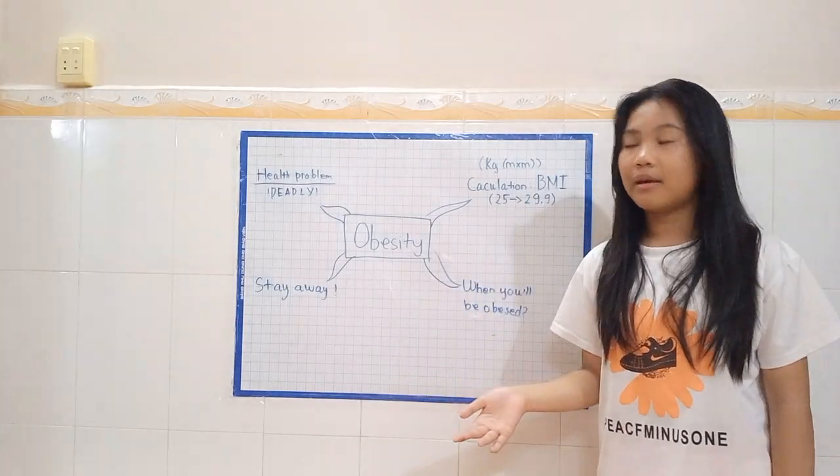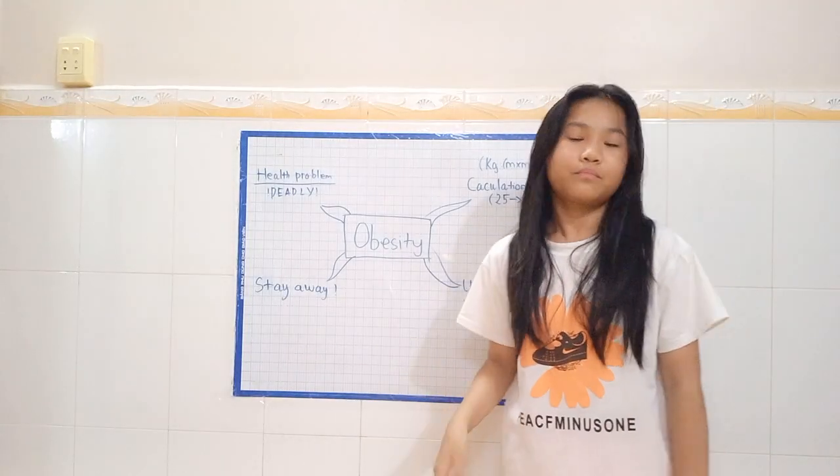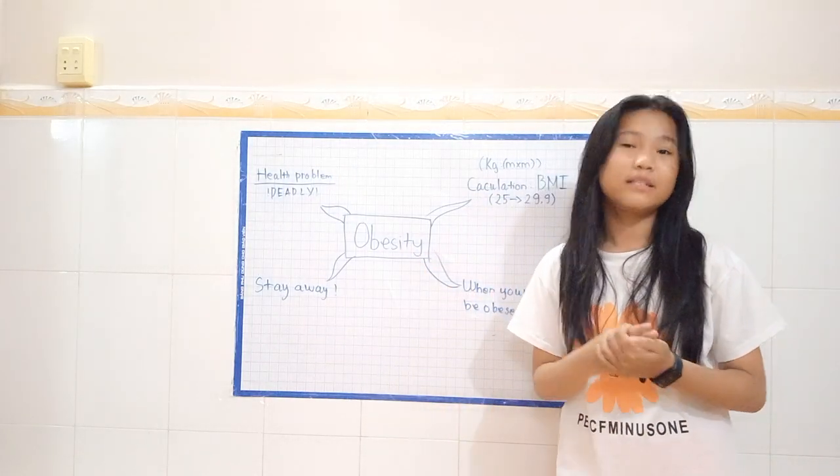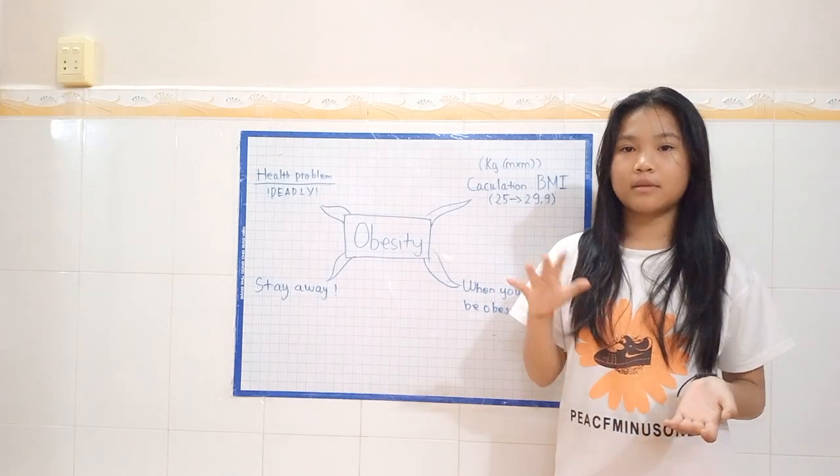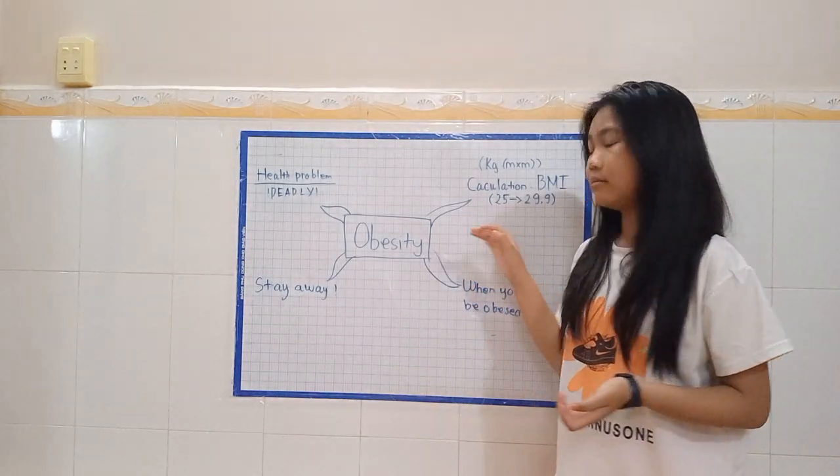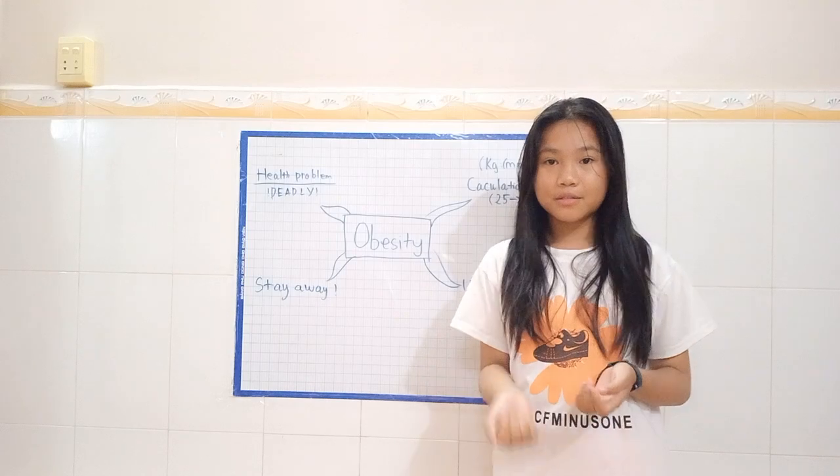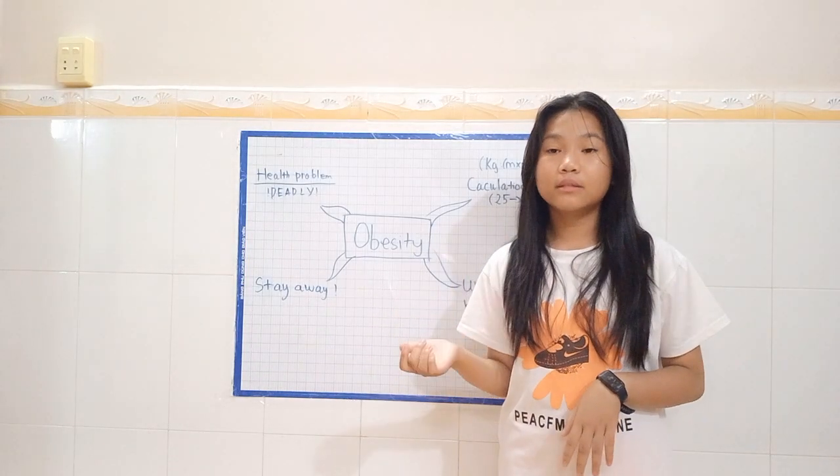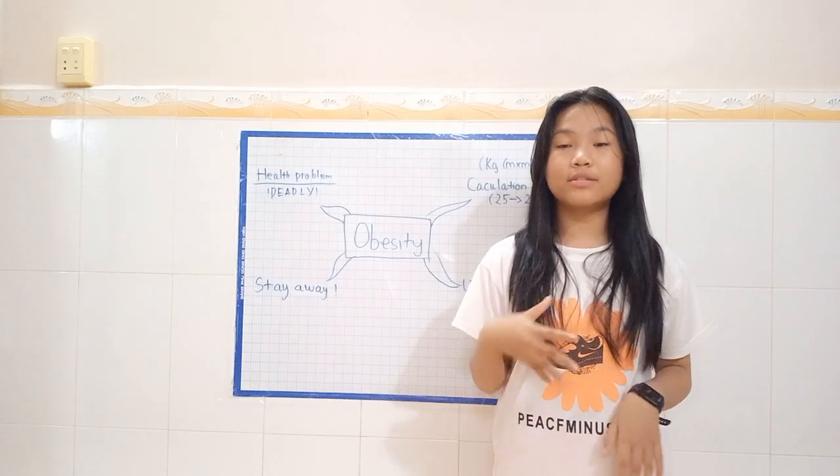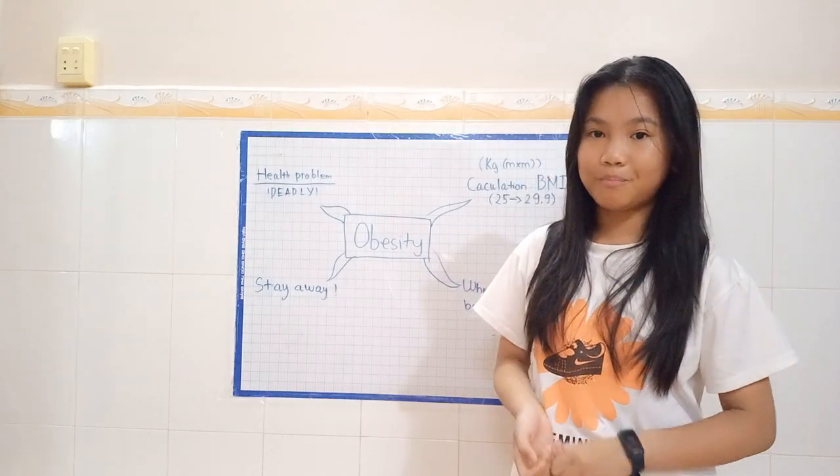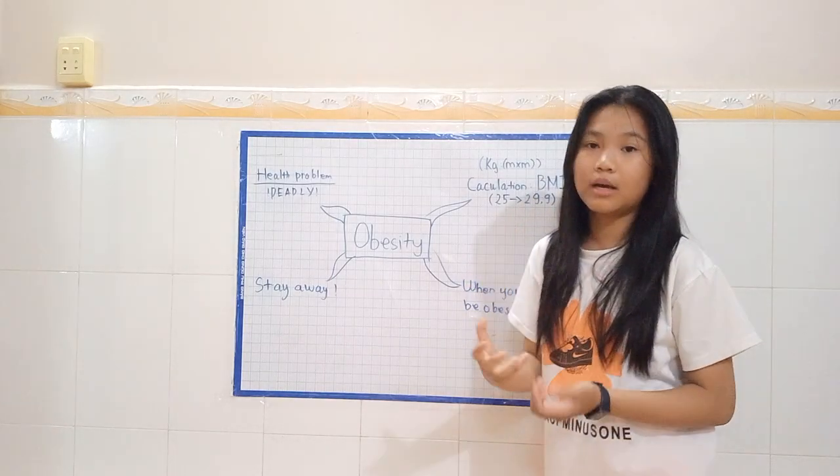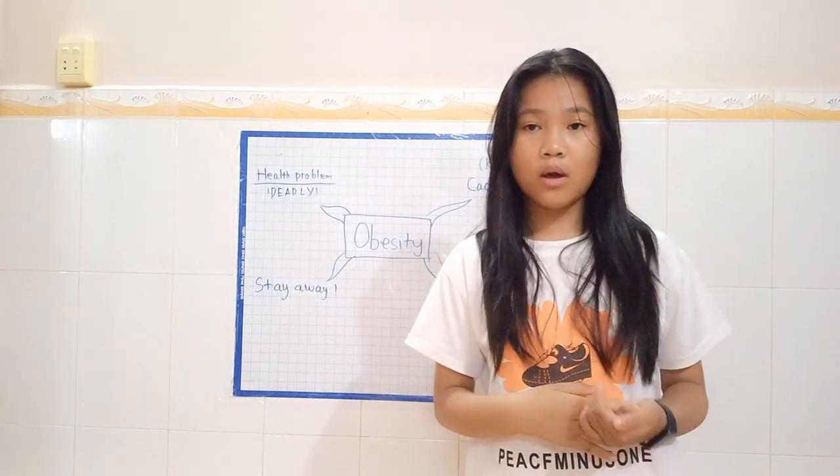which is something very easy. For example, if you are 64 kilograms and you are about 1.5 meters tall, then your BMI should be about 29, which is still not considered obese. But this calculator is not always correct.